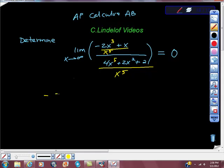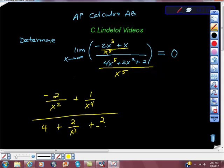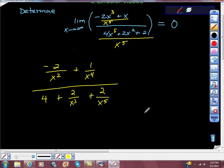And when you did that, you would get negative 2 over x squared, right, plus 1 over x to the fourth over 4, plus 2 over x cubed, plus 2 over x to the fifth. And if you take the limit of all of these pieces one at a time, they would look like this.